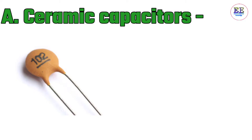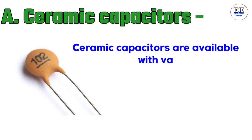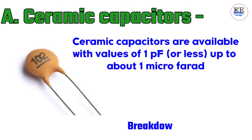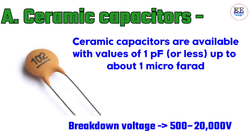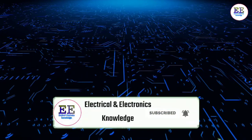In the disc form, silver is deposited on both sides of the ceramic dielectric to form the capacitor plates. Ceramic capacitors are available with values of 1 picofarad up to about 1 microfarad, and their breakdown voltage is 500 to 20,000 volts.